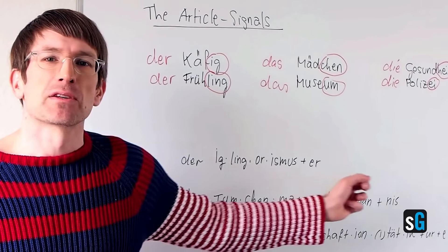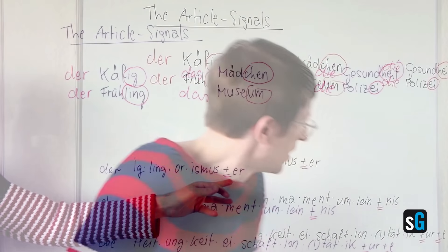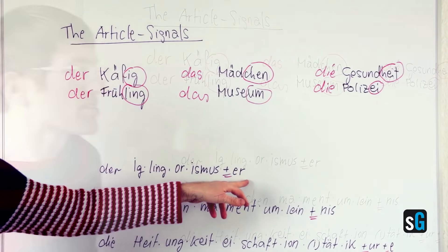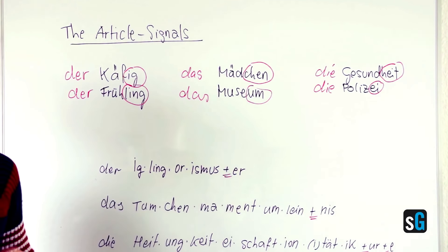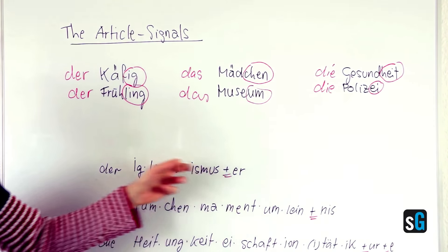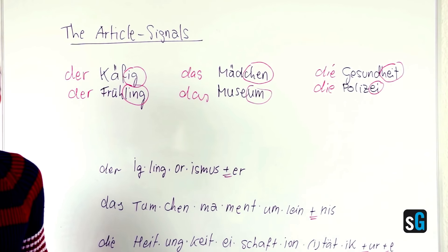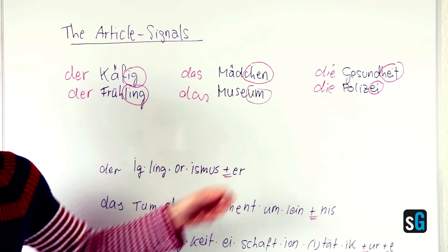One last thing. You might notice that the following signal is not as reliable as the ones before — there's always an exception or two. But these are only about 80% accurate. Which, still in comparison to 33%, which you get when you just guess the article, I think it's a very good guess.